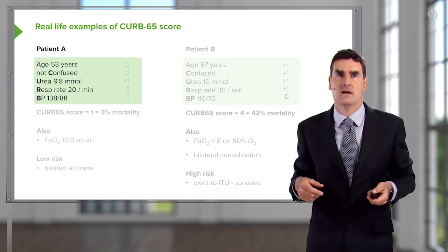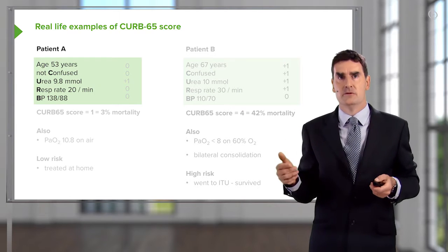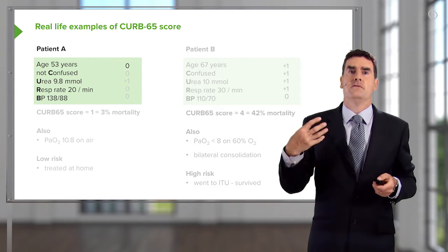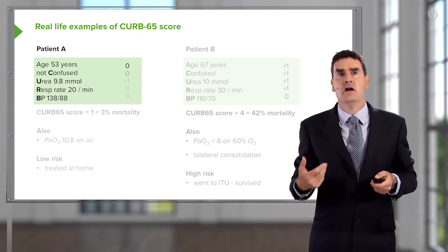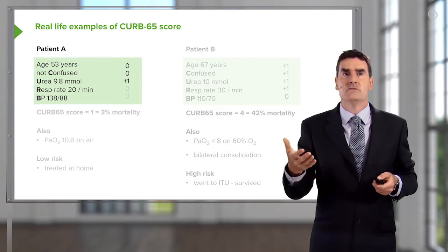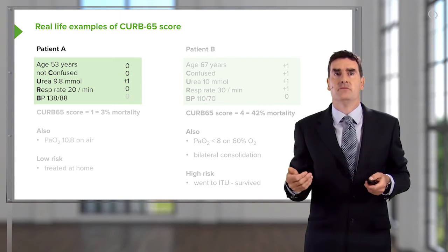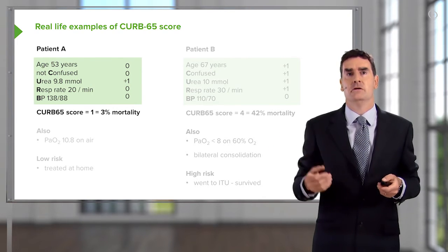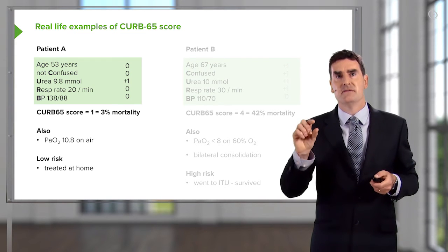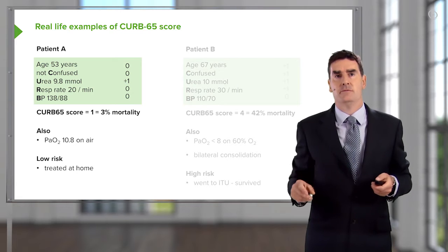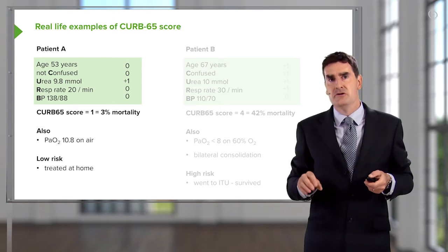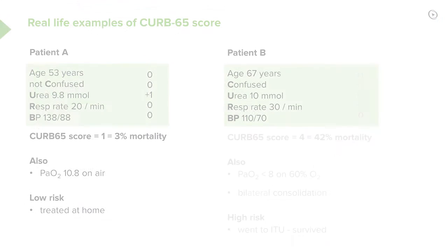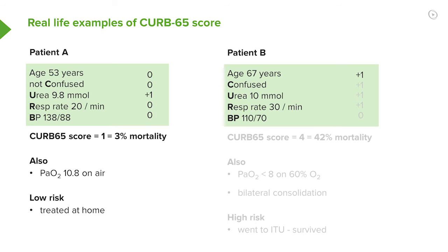For example, Patient A: age 53, presents to casualty with cough, phlegm, and fever for the past three days. Not confused; urea was slightly high at 9.8 but not terribly breathless; blood pressure was normal. That gives a CURB-65 score of 1 — just for the urea — giving about 3% mortality. They're not hypoxic; chest X-ray confirms pneumonia, but they could be treated at home with oral antibiotics.